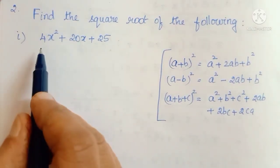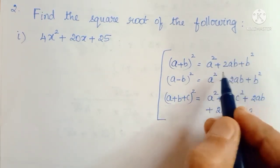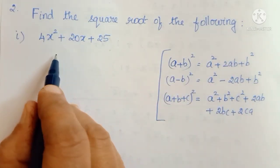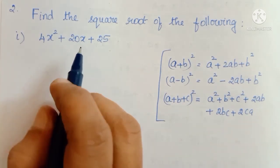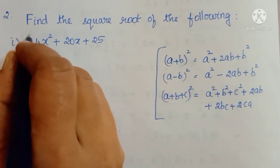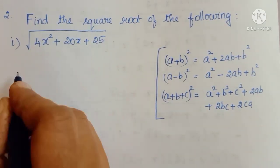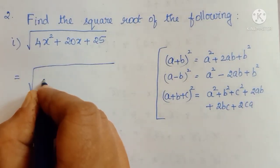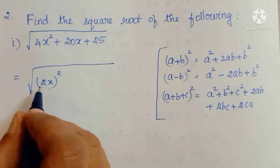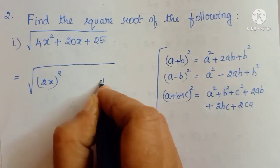Now let us come to the first sum and see how we are going to rearrange this one. The given polynomial is 4x squared plus 20x plus 25. I am going to rearrange the first term and the last term. That is: the square root of 4x squared can be written as 2x, the whole squared — because it is in a squared format, so you have to identify the value of a. So we are writing 4x squared as 2x whole squared. Same way, 25 can be taken as 5 squared.